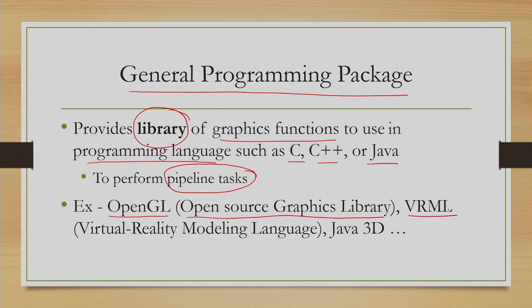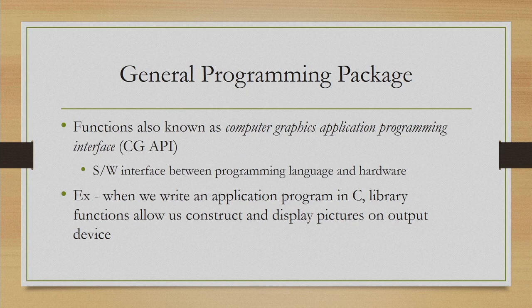Also, there are VRML (Virtual Reality Modeling Language), Java 3D, and so on. There are many such libraries provided to implement graphics functions. These functions are also known as the Computer Graphics Application Programming Interface, or CG API. They are essentially a software interface between the programming language and the hardware.